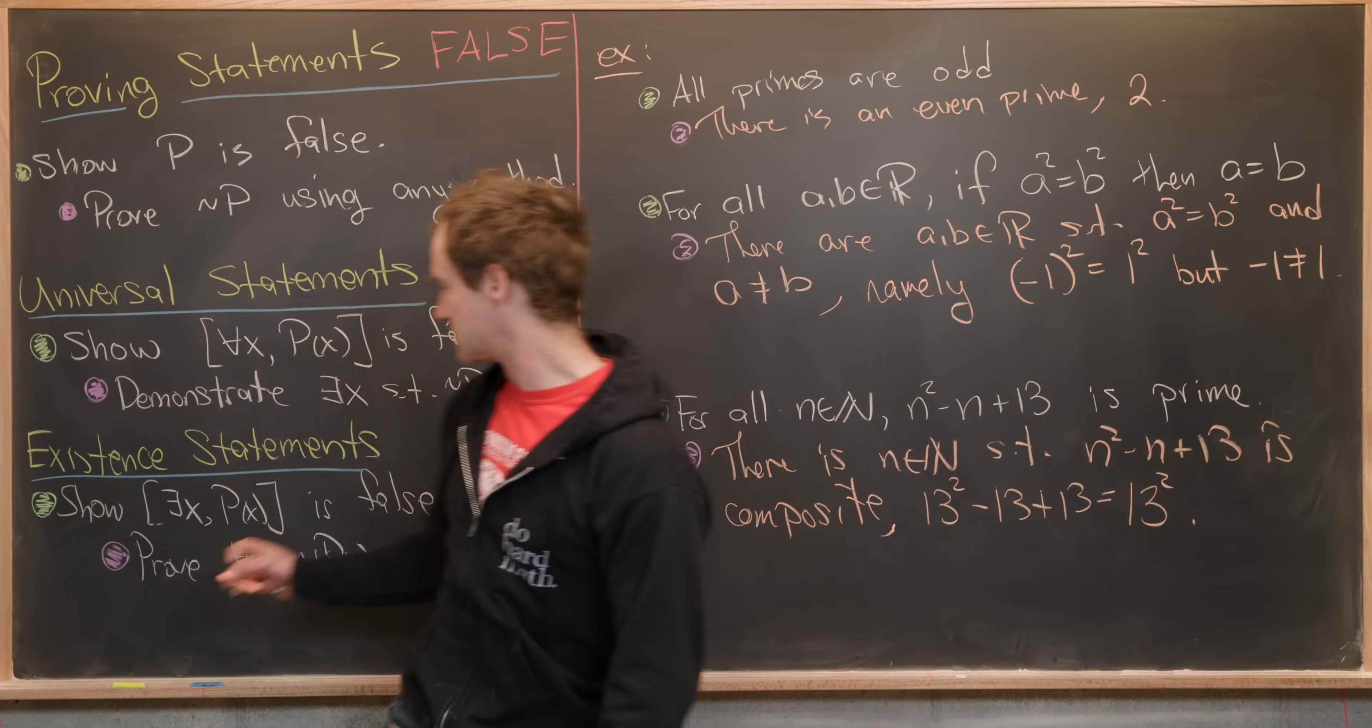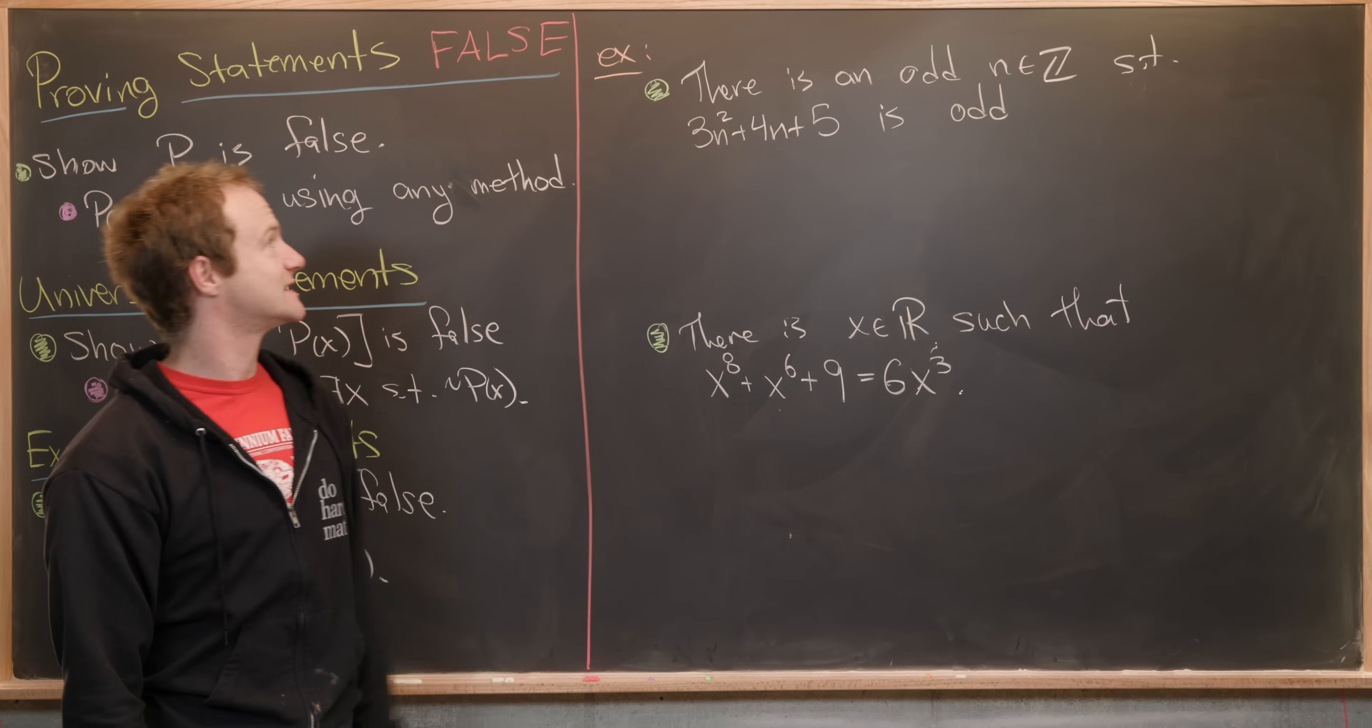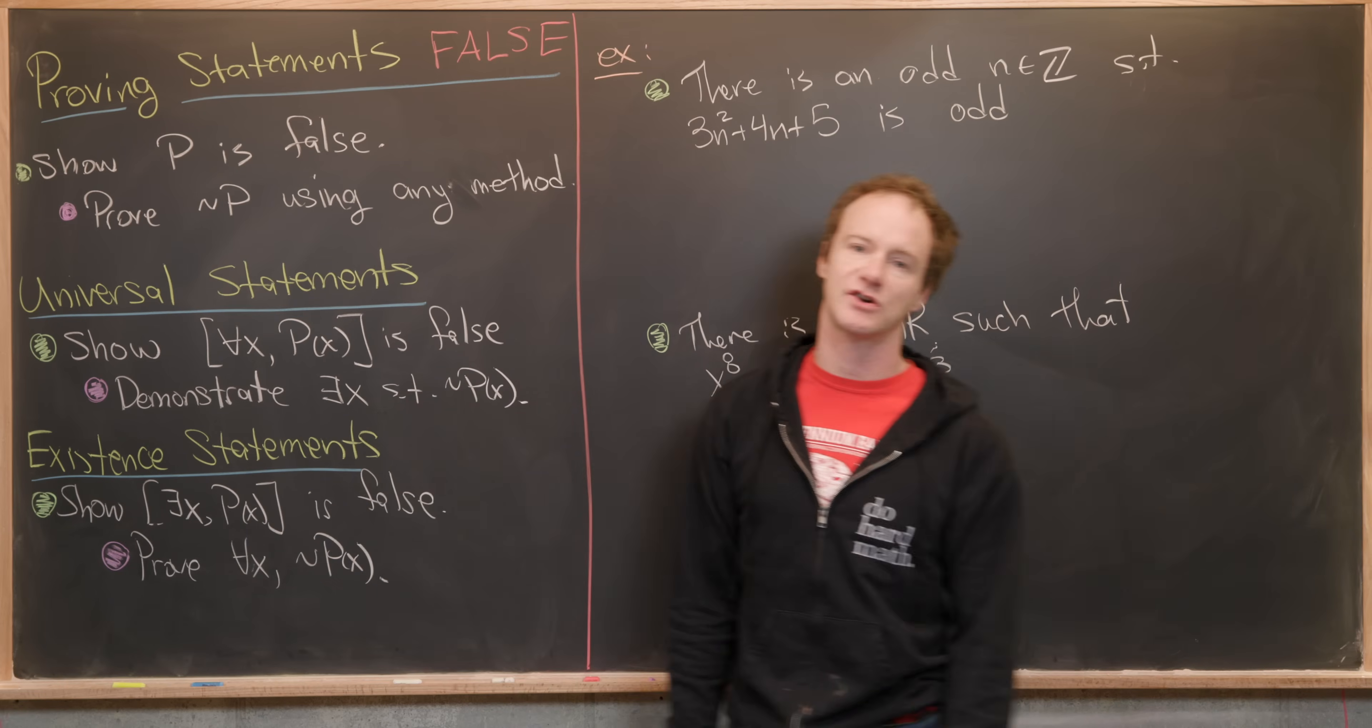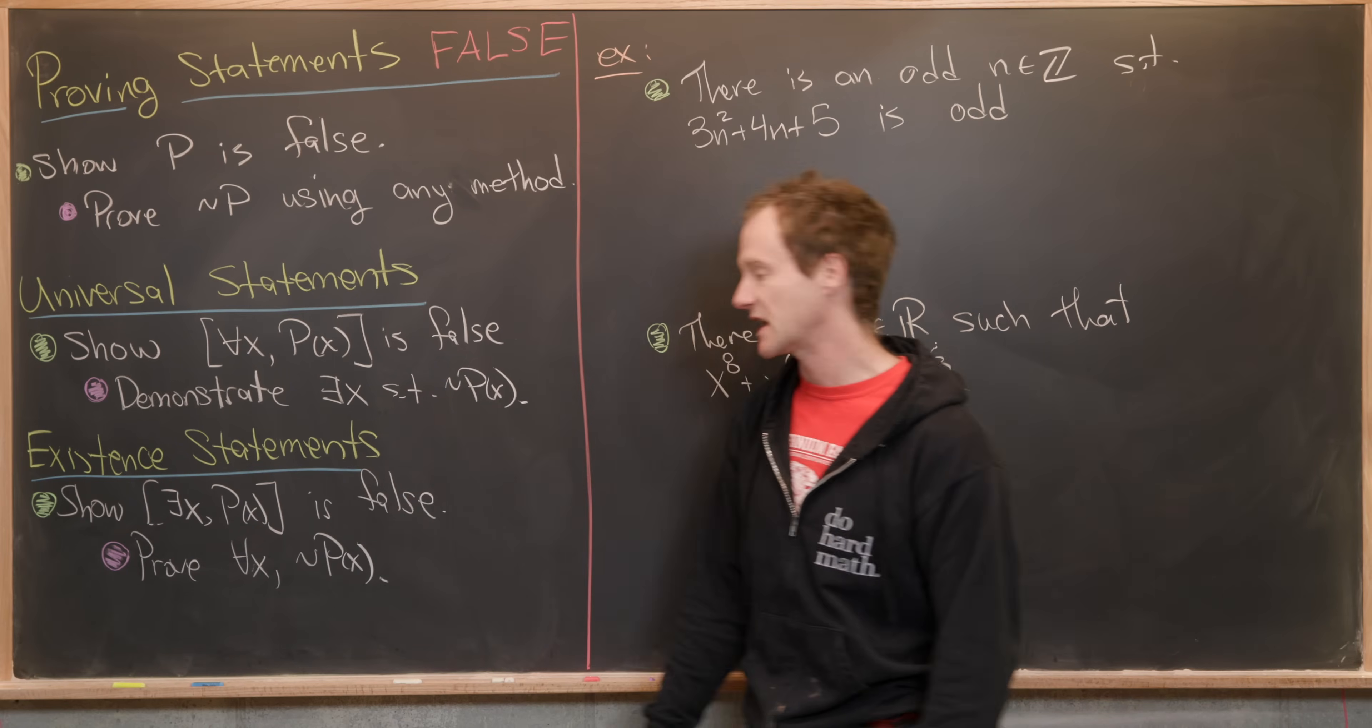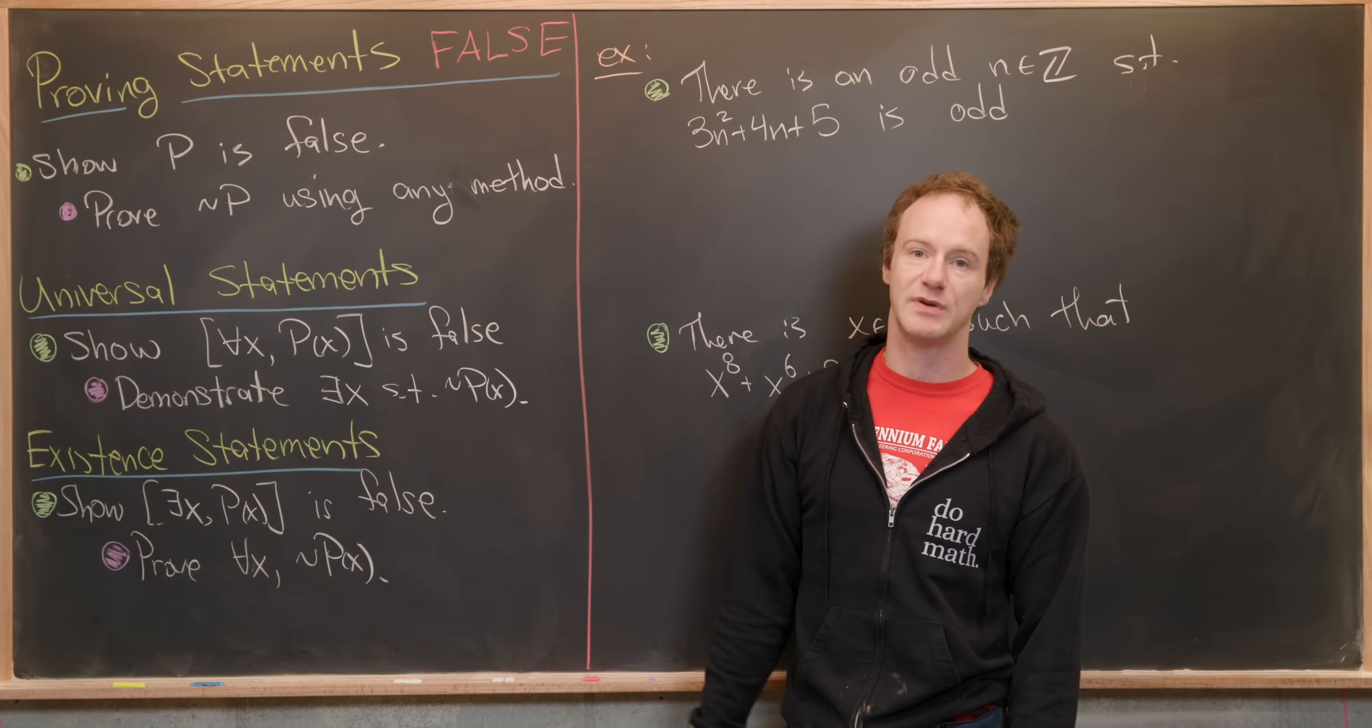Let's get rid of this and look at some examples of existence statements. We just got done showing some universal statements were false. Now let's do the same thing for existential statements. To negate an existence statement, there exists turns into a for all, and then you negate whatever the statement is. To show that there exists an X such that P of X is false, you need to prove that for all X, not P of X.